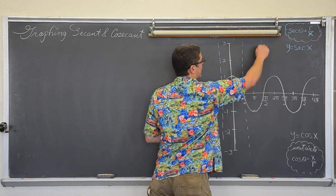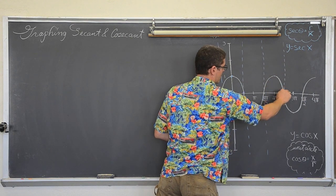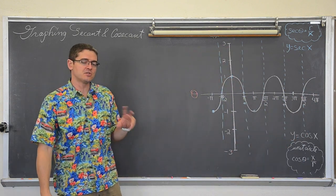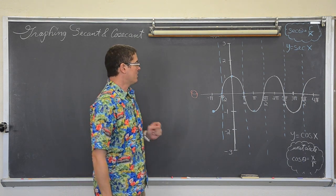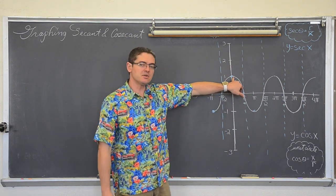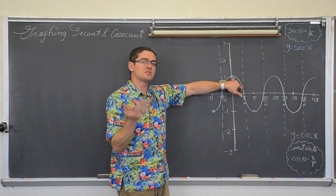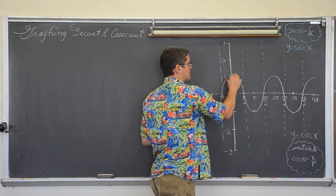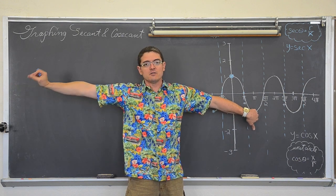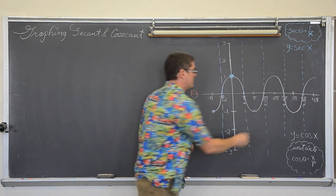Anywhere I pass through the middle point — not the max or the min value — I set up a vertical asymptote, because that is where the secant or cosecant graph would be undefined. At zero, the cosine of zero is one, and the secant of zero is the reciprocal of one, which is still one. At pi, cosine is negative one, and the secant of pi is the reciprocal of negative one, which is still negative one. So the secant graph shares those max and min points with the cosine graph.